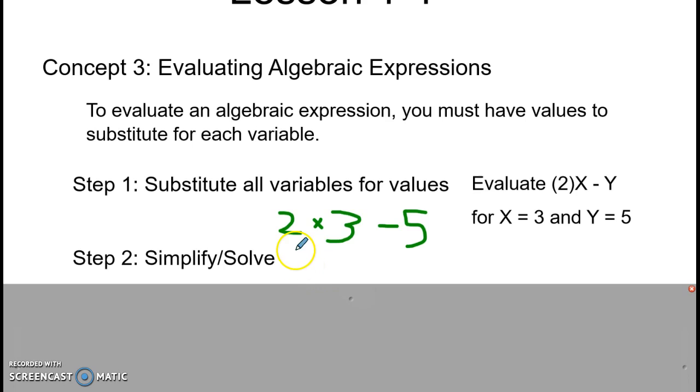And order of operations: 2 times 3 is 6, minus 5 equals 1.